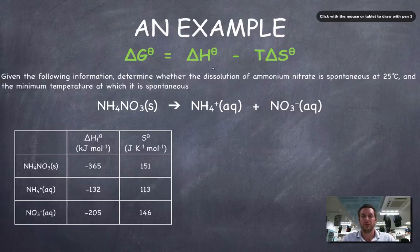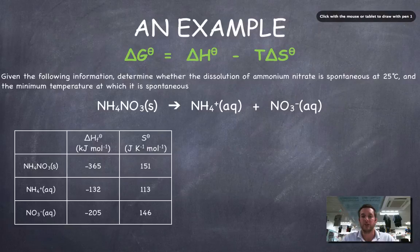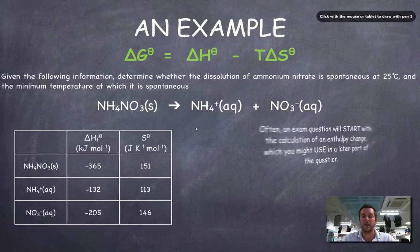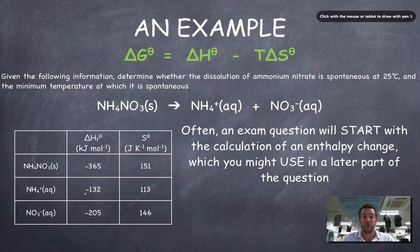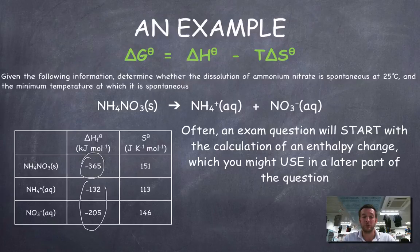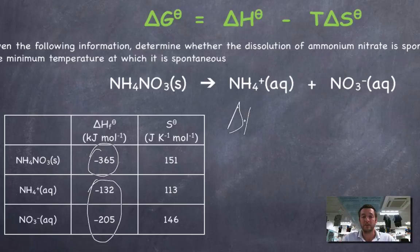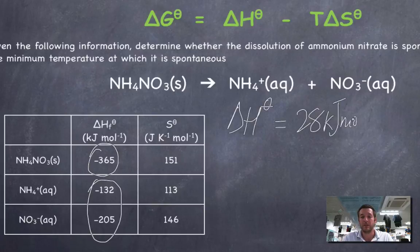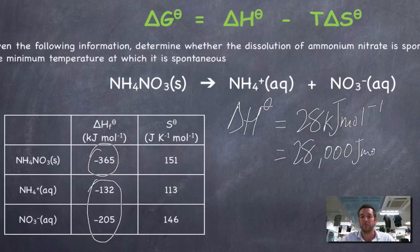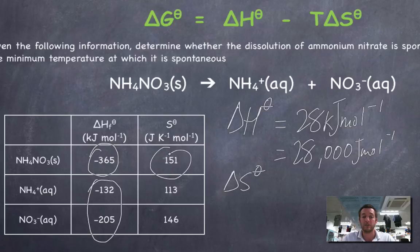To do this, we need to know the enthalpy change and the entropy change. The enthalpy change is found by subtracting the sum of the enthalpies of formation of the reactants from the enthalpies of formation of the products. I find the standard enthalpy change here is 28 kJ/mol. Remember from the last film, we've got to watch out with entropies and their different units. Here we'll have an entropy change in joules per mole, not kilojoules per mole, so it's wise to change this to 28,000 J/mol.